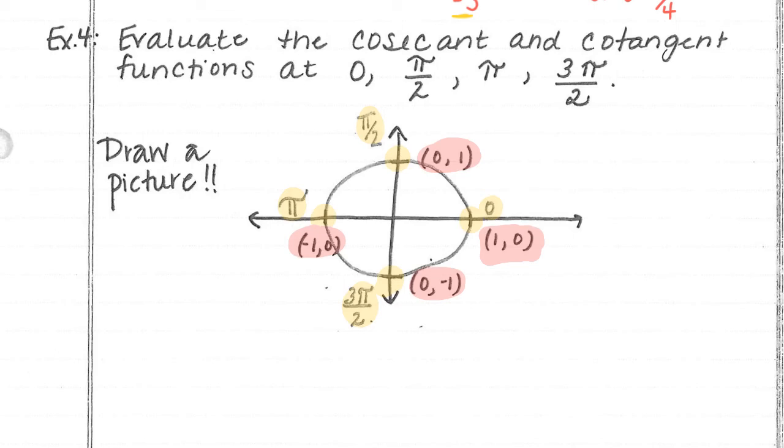So it's telling us, let's start with our cosecant. Our cosecant is the opposite of sine. So if they're the opposite of sine, remember my sine at 0. I'm going to put 0, and then I'm going to put pi over 2, and then I'm going to put pi, and then I'm going to put 3 pi over 2. And all of these I'm going to have for cosecant and cotangent.